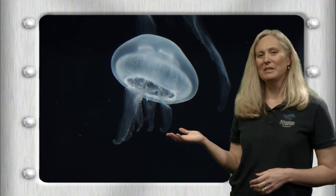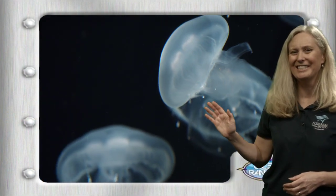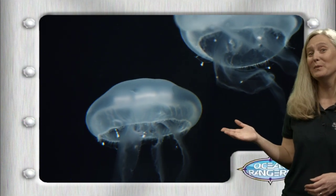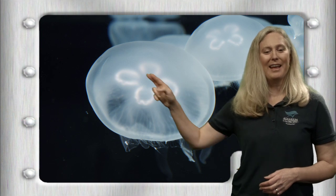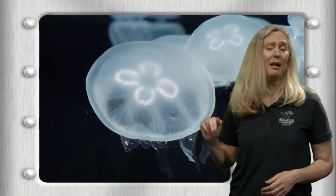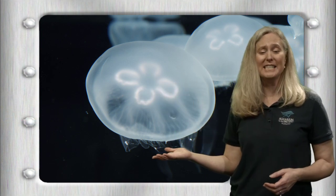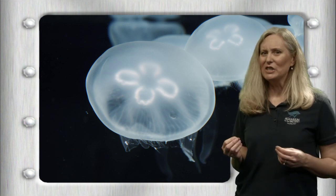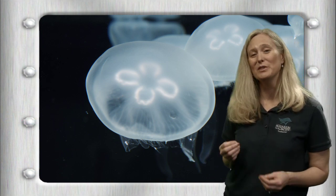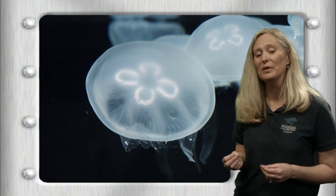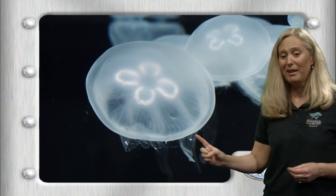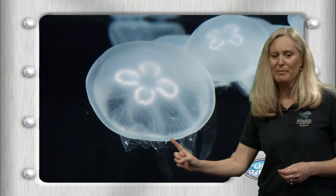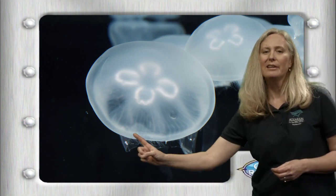Here's a moon jelly — we actually have these at the Aquarium of the Pacific that you can touch. Believe it or not, we allow our guests to touch them gently on the top of the bell; they have no stinging cells there. Even the stinging cells they do have are not very strong because they only use them for catching plankton. Moon jellies eat very small food and don't need a very strong sting, and they've got very, very short tentacles.